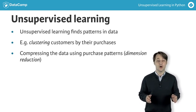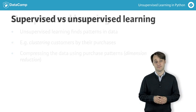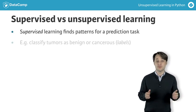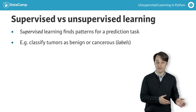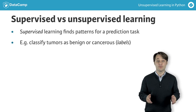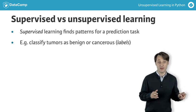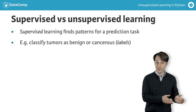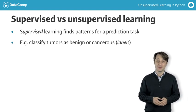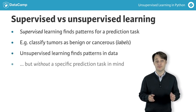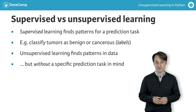Unsupervised learning is defined in opposition to supervised learning. An example of supervised learning is using the measurements of tumors to classify them as benign or cancerous. In this case, the pattern discovery is guided or supervised so that the patterns are as useful as possible for predicting the label — benign or cancerous. Unsupervised learning, in contrast, is learning without labels. It is pure pattern discovery, unguided by a prediction task.